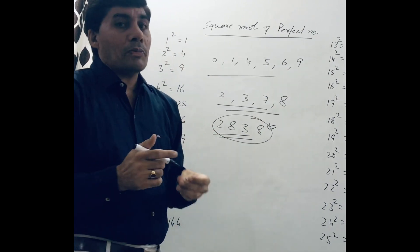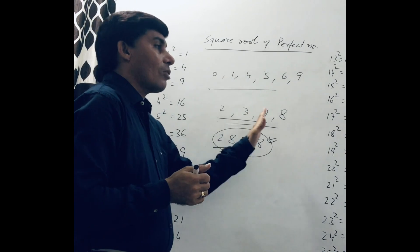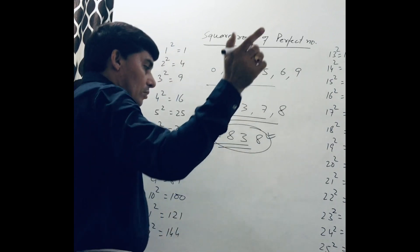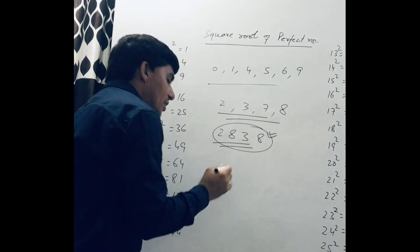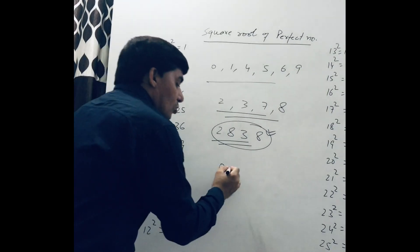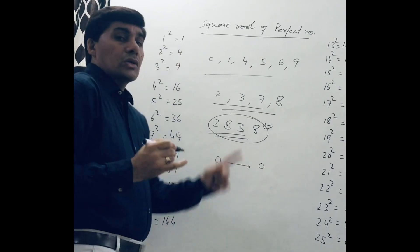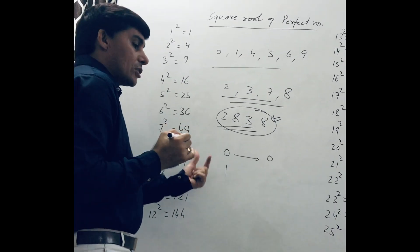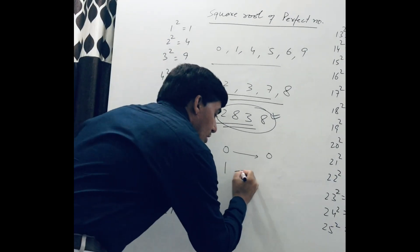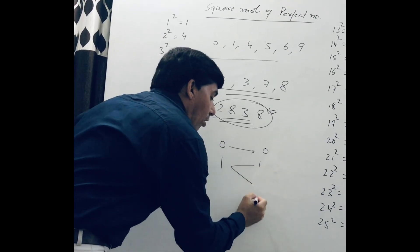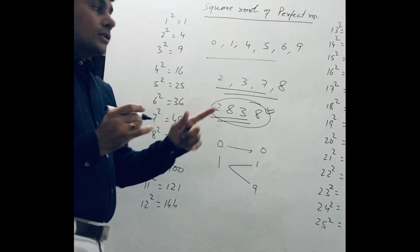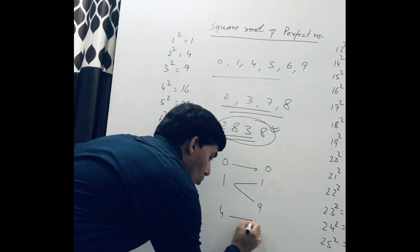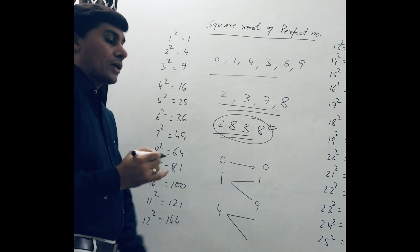So we conclude that in a perfect square number the unit place is always 0, 1, 4, 5, or 9. Now we see: if the unit digit of any number is 0, then its square root also has the unit digit 0. If the unit digit of any number is 1, then its square root has unit digit either 1 or 9. If the unit place is 5, then its square root unit digit is also 5.